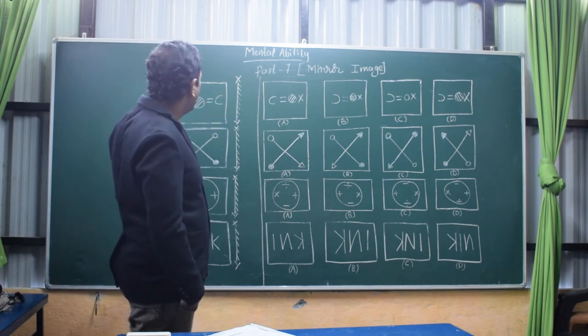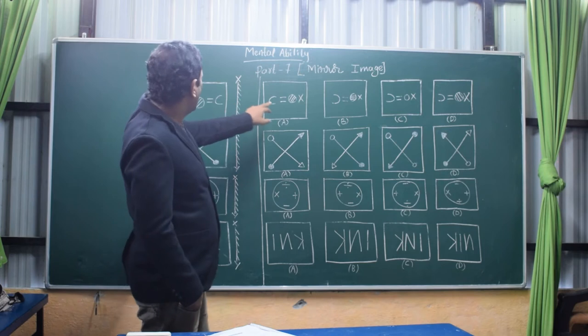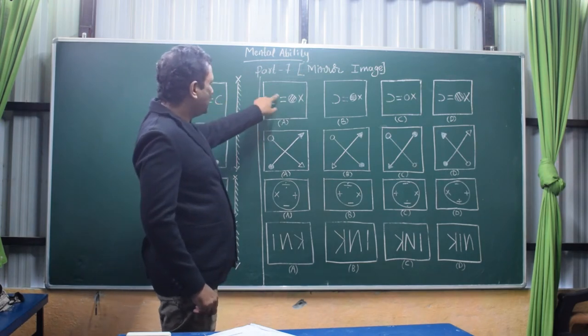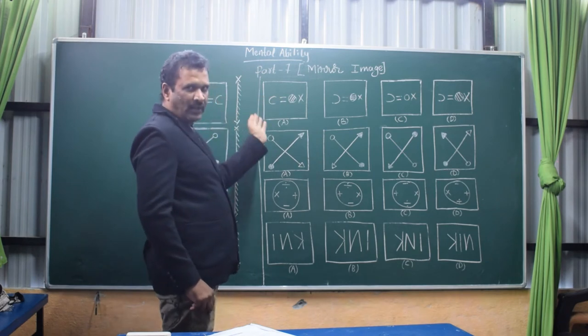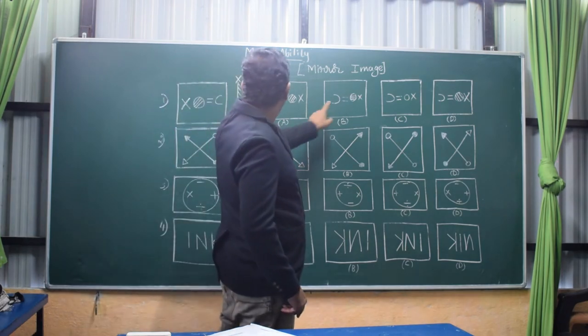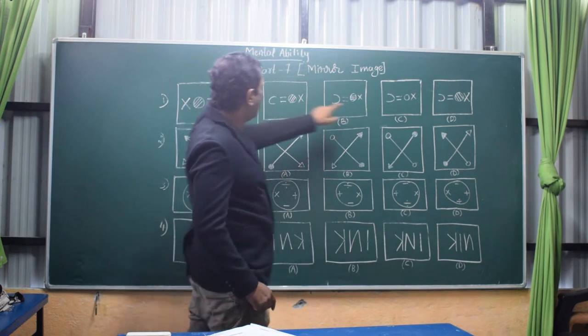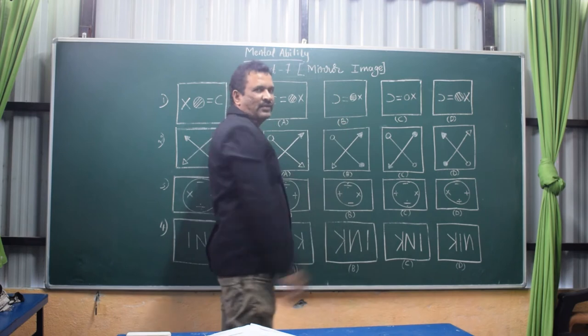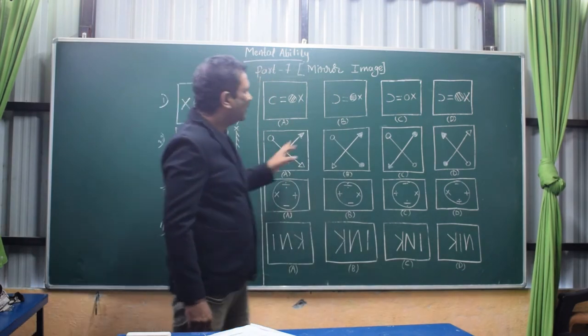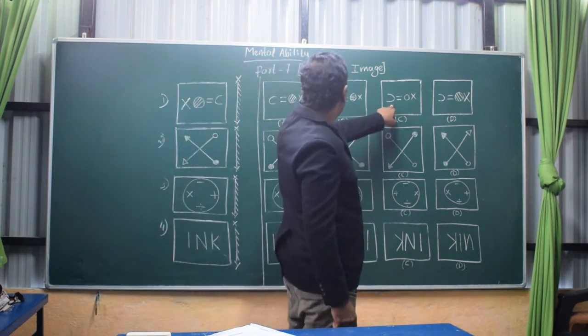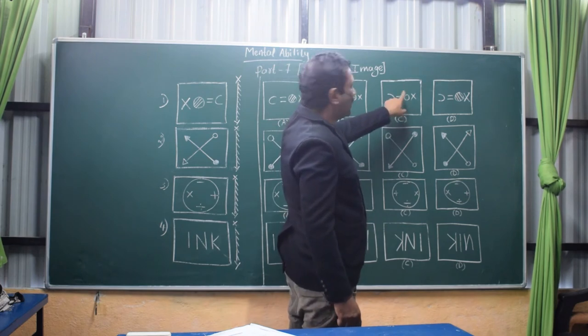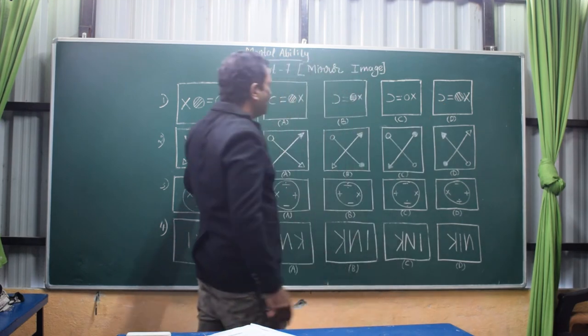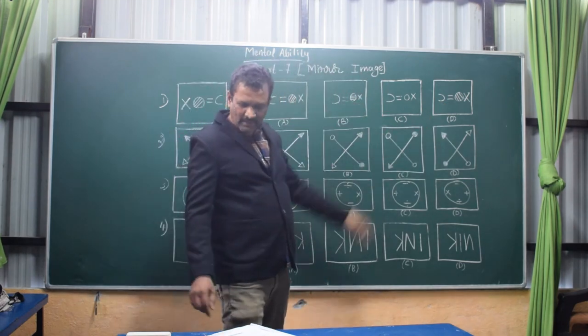In question number 1, if you see the mirror, all figures become opposite direction. X will become this side and this circle, and C, everything is completely opposite. Look at the answer. This is not similar because the C is the same, it should be inverted. Here X is there, circle is also there, but inside the circle the line is straight instead of cross line. This is also not the answer. Here the circle is there but there is no line, so this is also rejected.